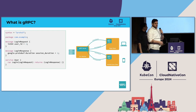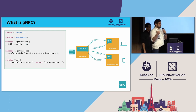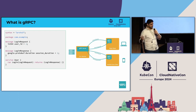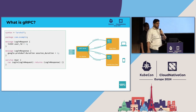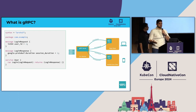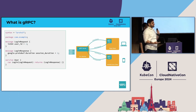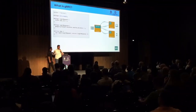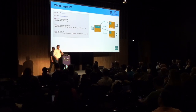For example, the Container Storage Interface, the Container Networking Interface, and the upcoming KNI, or Kubernetes Networking Reimagined Interface. Beyond the Kubernetes control plane, gRPC is used by thousands and thousands of engineering organizations to get their bytes where they're going and make sense of them on the other end.